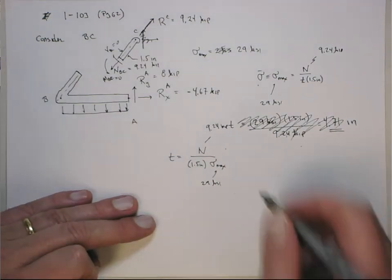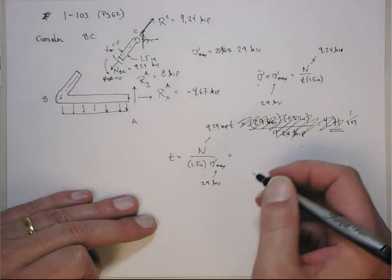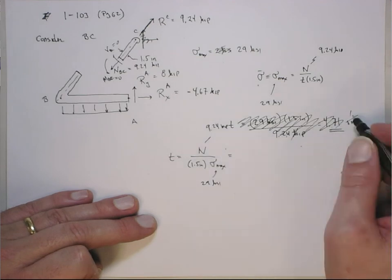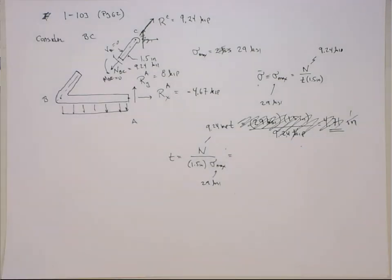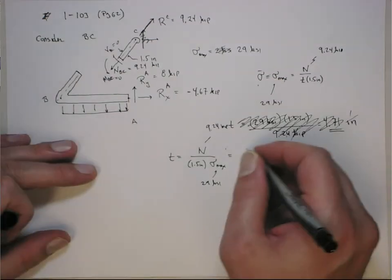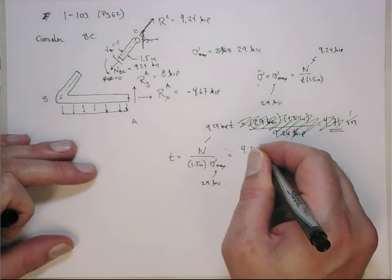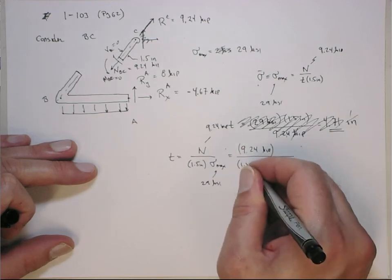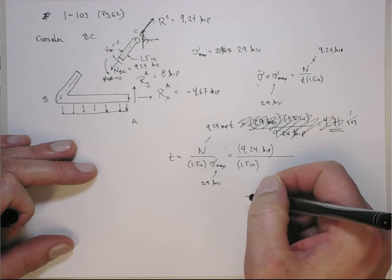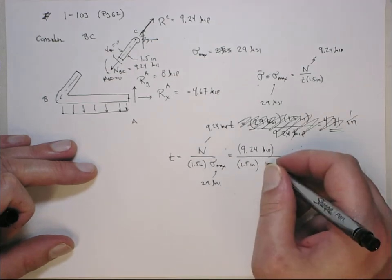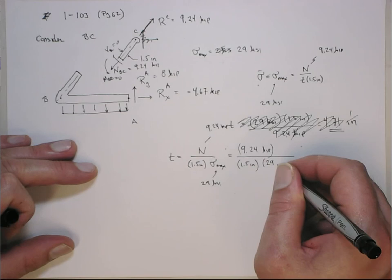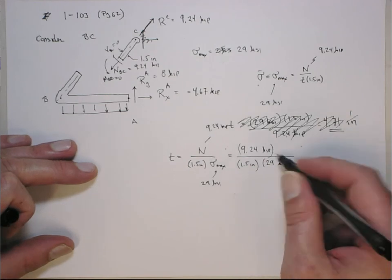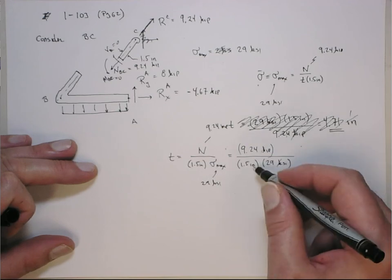All right. Actually, yeah, this would have been 1 over inches. So, that will come up better. It's the same thing, just the inverse of that. So, you can plug through the numbers. 9.24 kip over 1.5 inches times 29 KSI. All right. So, pounds, pounds, the pounds will cancel out. The Ks cancel out. Inch. Inch squared.